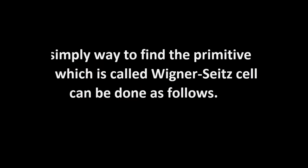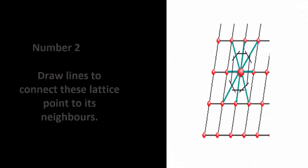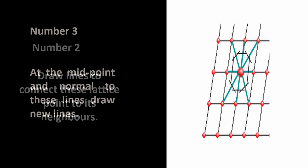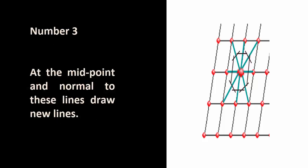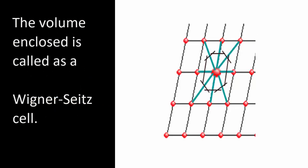Wigner-Seitz Method. A simple way to find the primitive cell, which is called the Wigner-Seitz cell, can be done as follows. Number 1: Choose a lattice point. Number 2: Draw lines to connect this lattice point to its neighbors. Number 3: At the midpoint of each line, draw a perpendicular bisector. The volume enclosed is called the Wigner-Seitz cell.